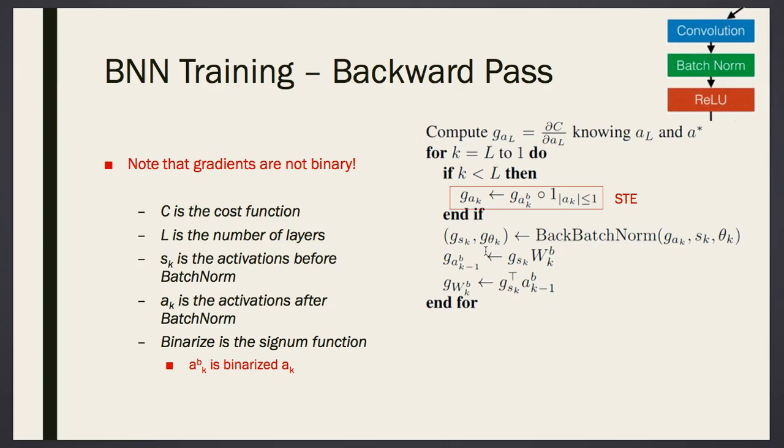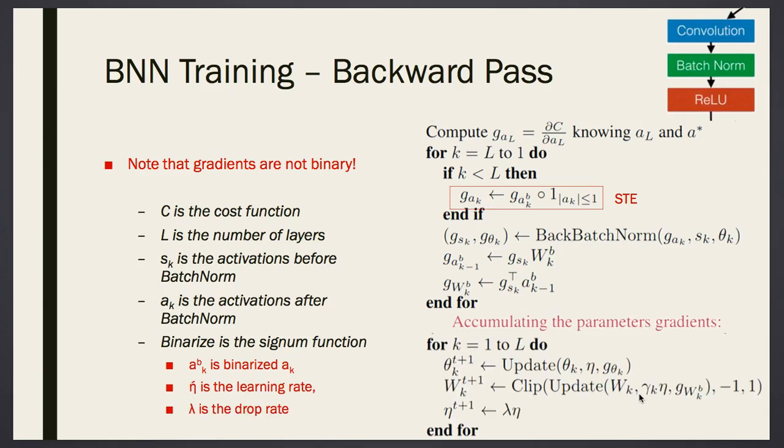So using non-binary gradients, we are updating the weights. How do we update the weights? We update them using the learning rate. So nu is the learning rate. Lambda is the drop rate. And AB is the binarized version of AK. We update the weights using the gradients.